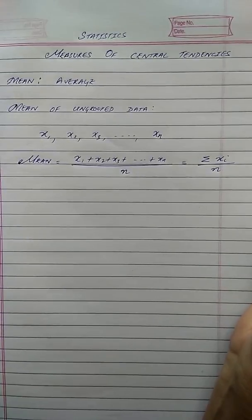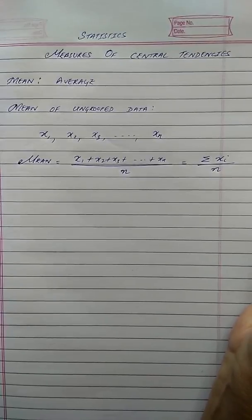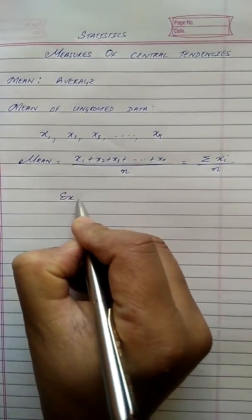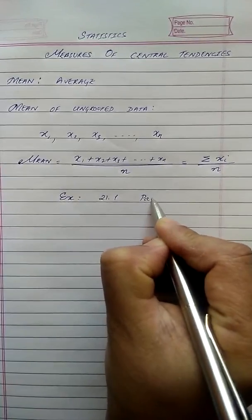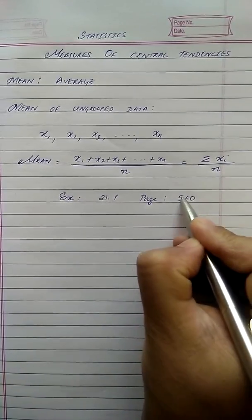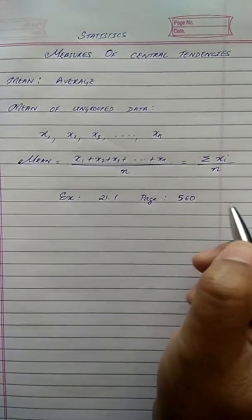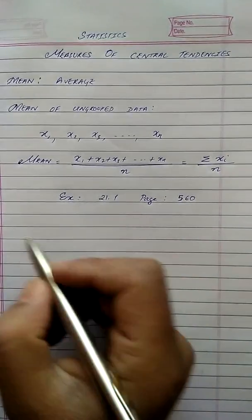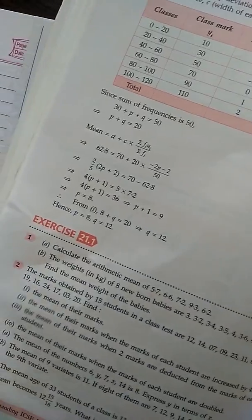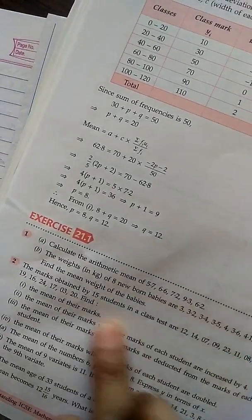Now, in order to understand this, we will take an example from our book and go to exercise 21.1. We are going to do exercise 21.1 on page number 560. This is according to the old book; the new edition may have a different page number. We are going to try question number 1a.